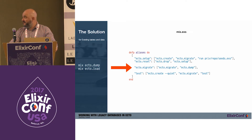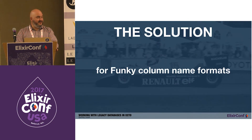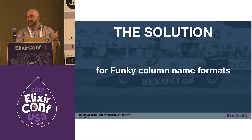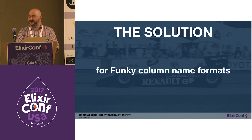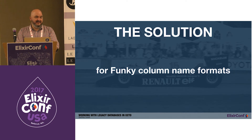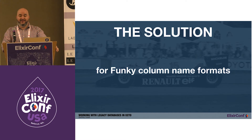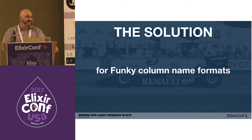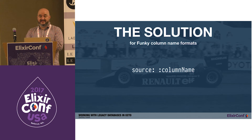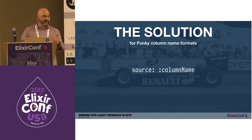Moving on to funky column name formats. In this particular database, the column names are in camel case. And if you've used Ecto in the past, you know that it defaults to underscores instead of camel casing. So if you just let it try to do its own thing, it'll fail — it'll say this particular column doesn't exist. To handle that, there's an option for fields called source, and you can pass the actual column name of the column you're trying to access.